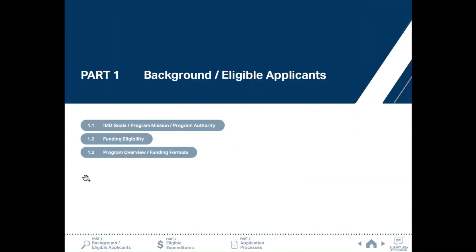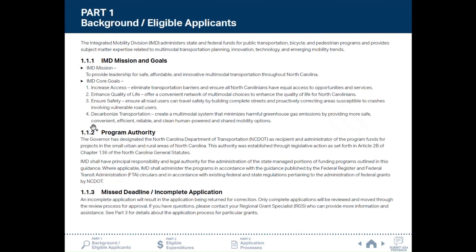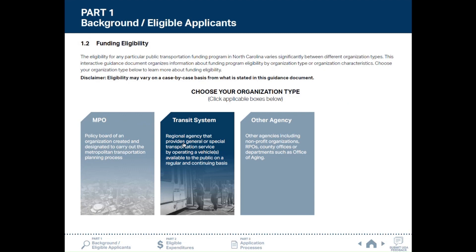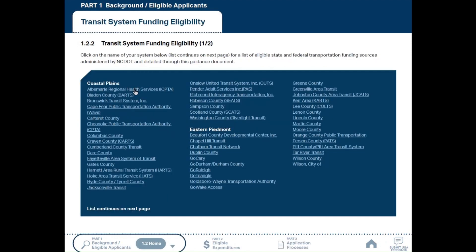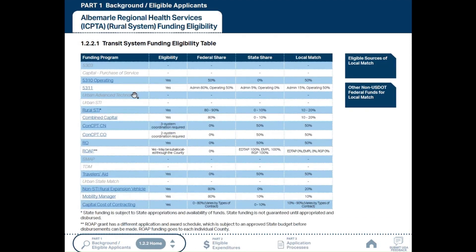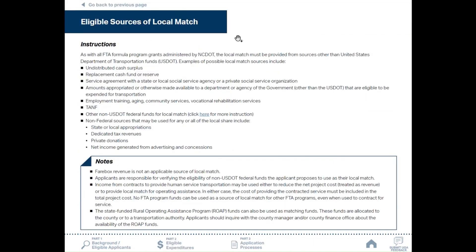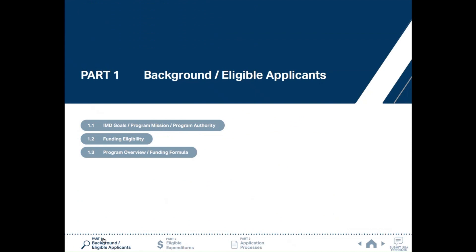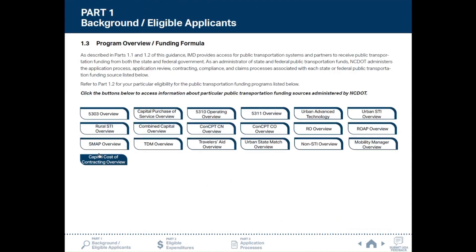Part 1 provides information about NCDOT's public transportation grant programs and funding goals. Part 1.1 states the IMD mission and goals and program authority. Part 1.2 shows eligible applicants in North Carolina. If you choose the organization type and then click an organization name, you will see which funding programs are eligible for that specific system. You can use additional information on the side and come back to the page you're working on, if needed. Part 1.3 shows all funding programs available through UGA.